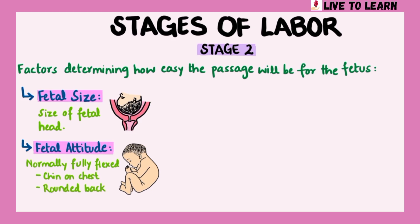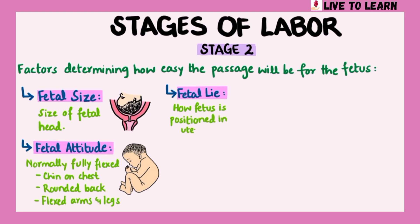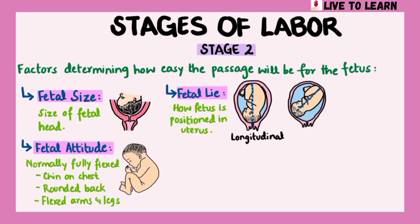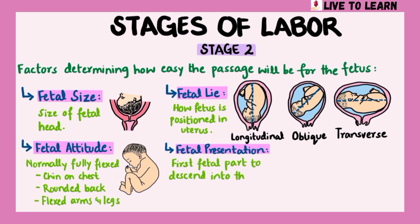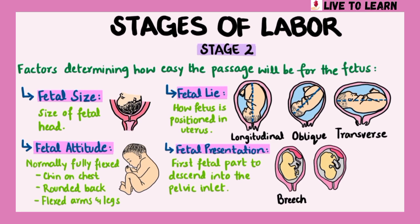Fetal attitude refers to the way the fetal body is flexed. It is normally fully flexed, that is the chin is on the chest, the back is rounded, and the arms and legs are flexed. Fetal lie refers to how the fetus is positioned in the uterus. The lie could be longitudinal, in which the fetal spine lies along the mother's spine; oblique, in which the fetal spine is at an angle to the mother's spine; or transverse, in which the fetal spine is perpendicular to the mother's spine. The longitudinal lie is ideal. Fetal presentation refers to the first fetal part to descend into the pelvic inlet. The presentation could be breech, in which the knees or feet present first; cephalic, in which the head presents first; or a shoulder presentation.